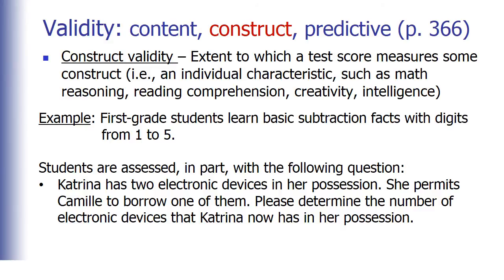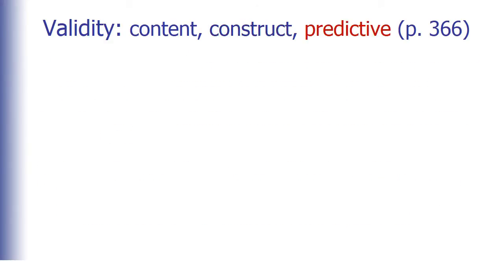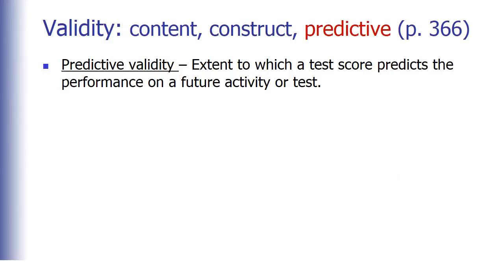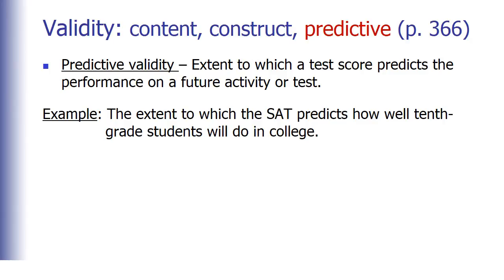The last type of validity discussed in the book is predictive validity, which is the extent to which a test score predicts the performance on a future activity or test. So an example of this would be the extent to which the SAT predicts how well tenth grade students will do in college. If the SAT predicted students' GPA in college pretty well, then we would say that the SAT had a high predictive validity. If it did not, then we would say it had a low predictive validity in this context.